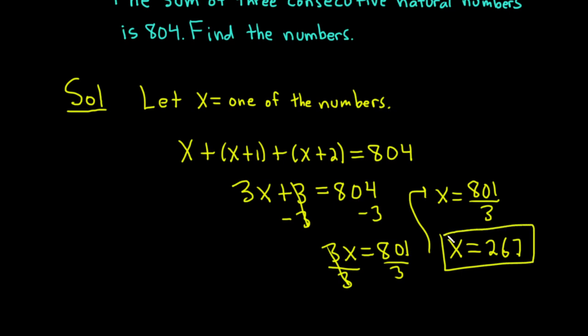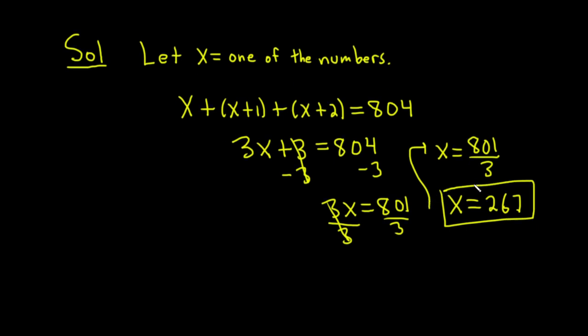That's our first number. But the other numbers are consecutive, so the next number would be 268, and the one after that would be 269. So these are the numbers: 267, 268, and 269.